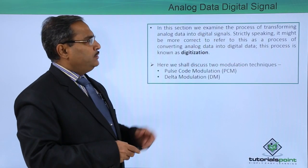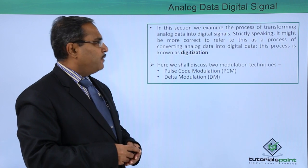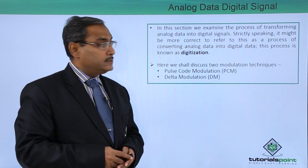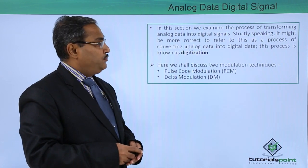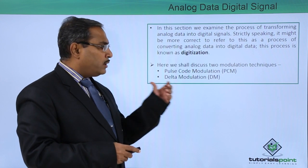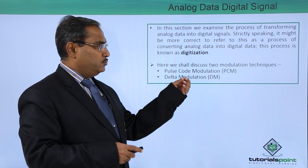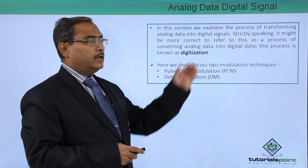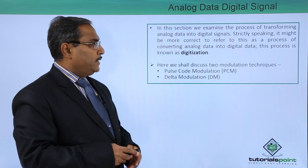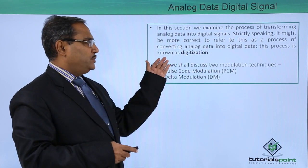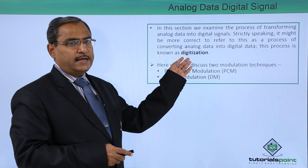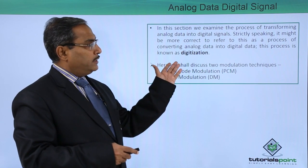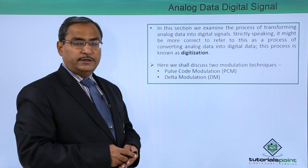In this section we examine the process of transforming analog data into digital signals. Strictly speaking, it might be more correct to refer to this as the process of converting analog data into digital data. This process is known as digitization — that is, we are converting from analog data to digital data.